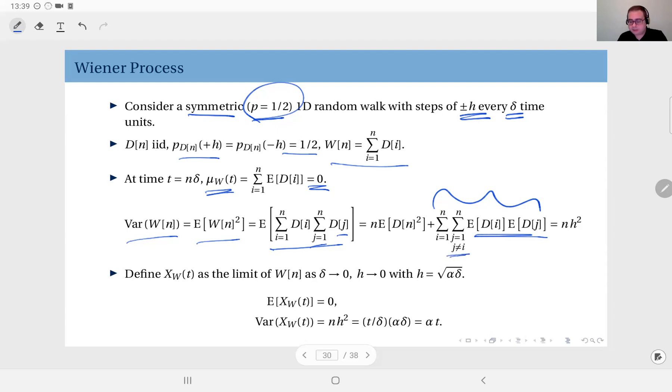Since D is an IID process, I can separate the expectation. The second moment of the step process: since the step is either plus h or minus h, its square is always h squared. So I have n times h squared. This term, since p is exactly one-half, the expected value of Di Dj is zero, so this term is completely zero. The variance of W[n] becomes n times h squared. It grows with time due to n.